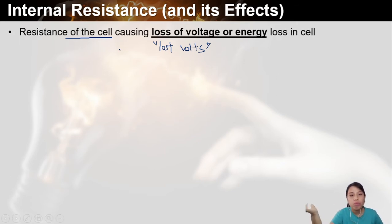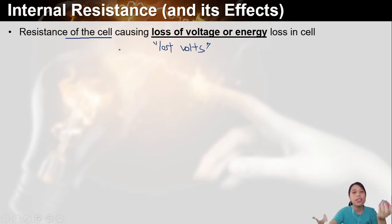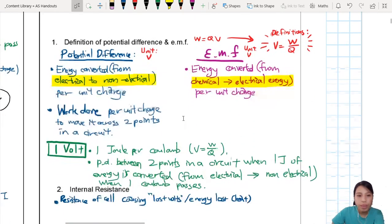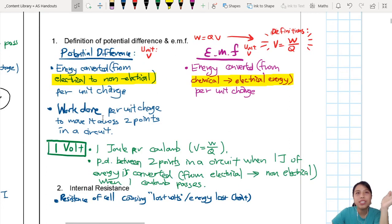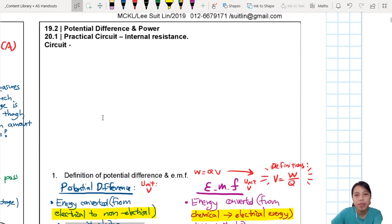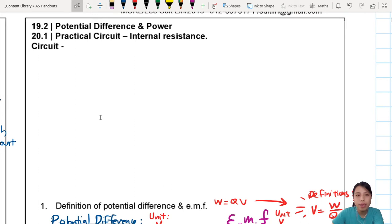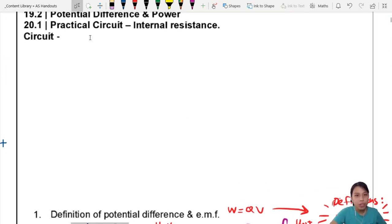Because of that, something originally supposed to have 9 volts come out, but when you connect it in a circuit, suddenly only 4 volts come out of your battery. I'm going to draw a circuit now so that we can have a practice of drawing circuits.